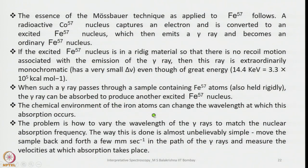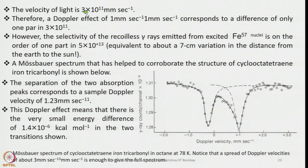The problem is how to vary the wavelength of the gamma rays to match the nuclear absorption frequency. The solution is almost unbelievably simple: move the sample back and forth a few millimeters per second in the path of the gamma rays and measure the velocities at which absorption takes place. The velocity of light is 3 × 10¹¹ mm/s, so a Doppler effect of 1 mm/s corresponds to a difference of only 1 part in 3 × 10¹¹. However, the selectivity of recoilless gamma-ray emission from excited Fe-57 nuclei is on the order of 1 part in 5 × 10¹³ — equivalent to about 7 cm variation in the Earth-Sun distance.